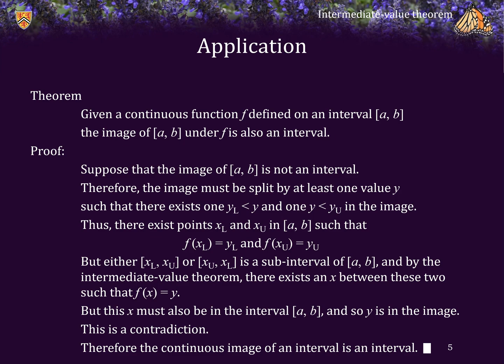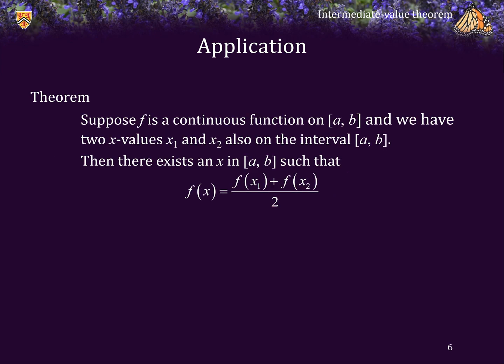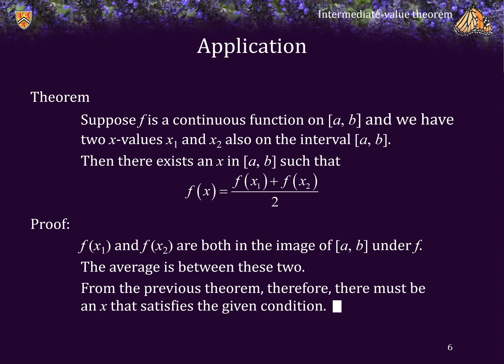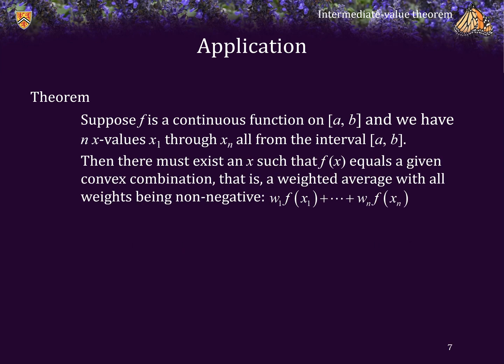Here's another interesting theorem: suppose f is a continuous function on [a, b] and we have two x-values x_1 and x_2 in the interval [a, b]. Then there must exist an x in [a, b] such that f(x) equals the average of f(x_1) and f(x_2). Proof: f(x_1) and f(x_2) are both in the image of [a, b] under f. The average is a value between these two endpoints, so from the previous theorem there must be an x that satisfies the condition.